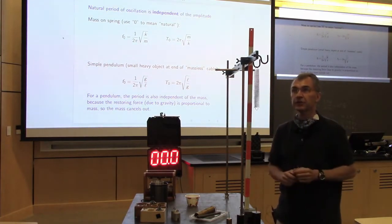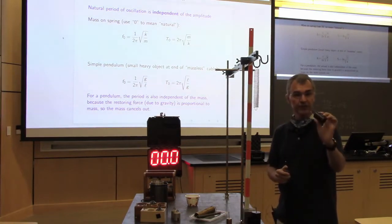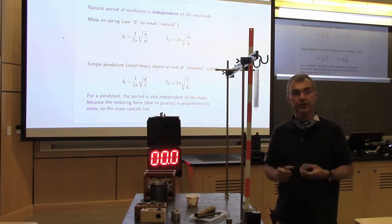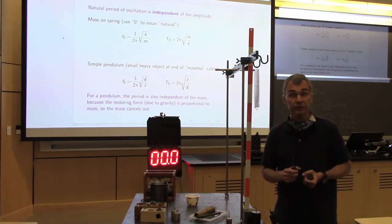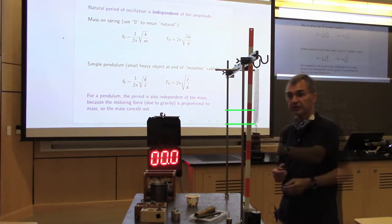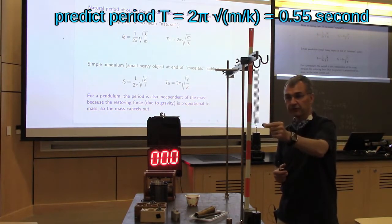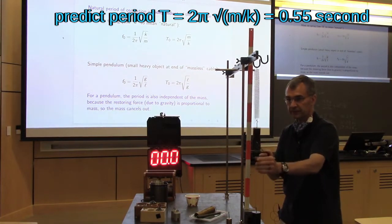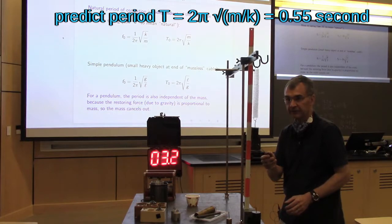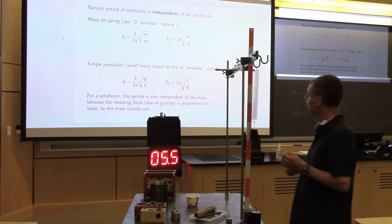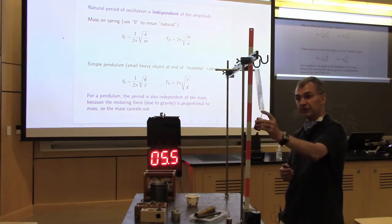Now with the same spring constant but a smaller mass — this is a 500-gram, half-kilogram mass — the period will be 2π times the square root of mass divided by spring constant, which works out to 0.55 seconds. So 10 bounces should take 5.5 seconds. You can also notice that the spring extends only 7.5 centimeters instead of 15 centimeters with half the weight on the end. [counts 0 through 10] Five and a half seconds — we predicted five and a half. We were right on the money.